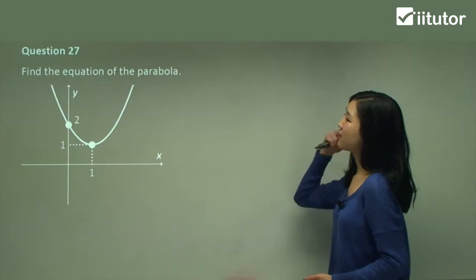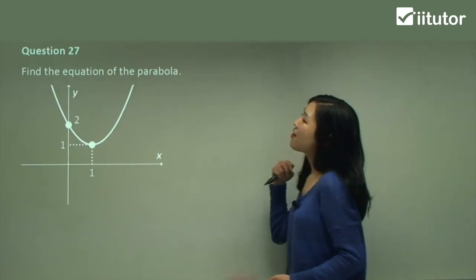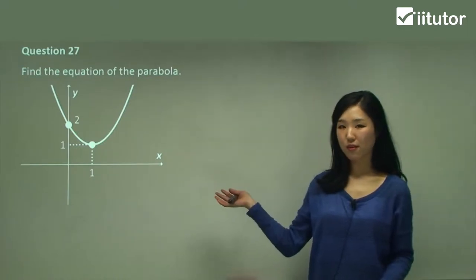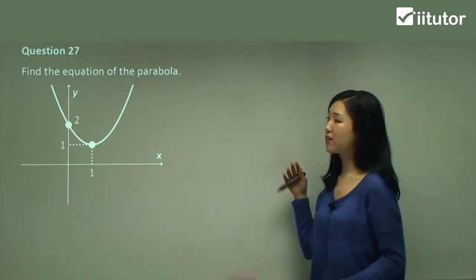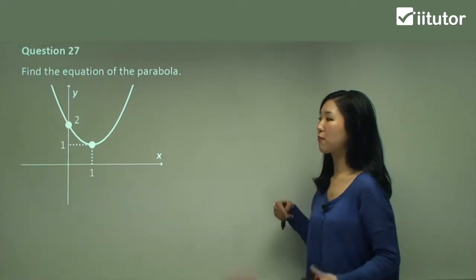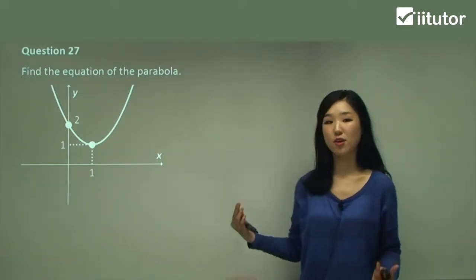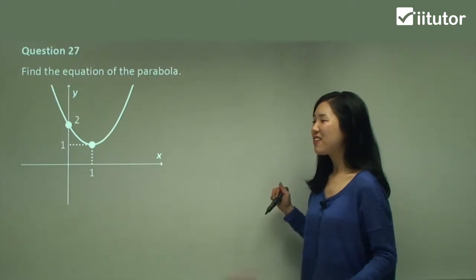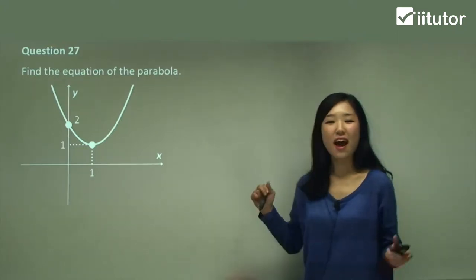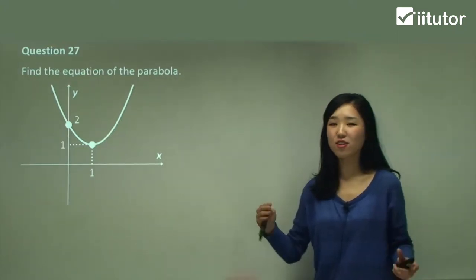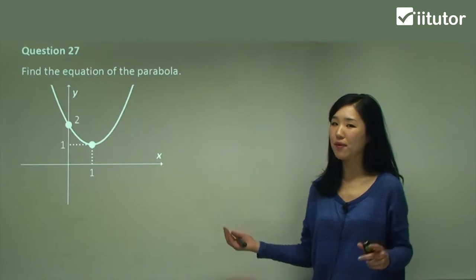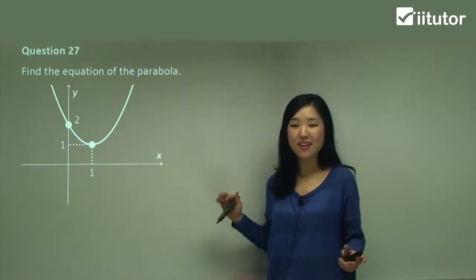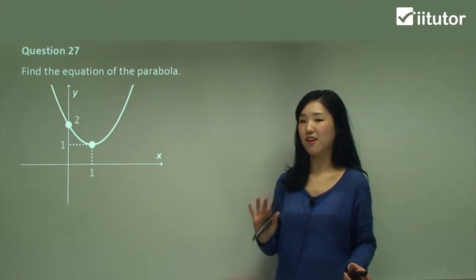So I'm starting with question 27: find the equation of the parabola. They already give you the graph and by looking at this graph, I'm going to try to find the equation of it. All you need to know here is how it translates — what happens when we translate left or right, up or down. That's all you need to know.